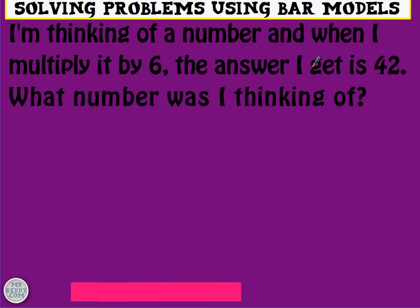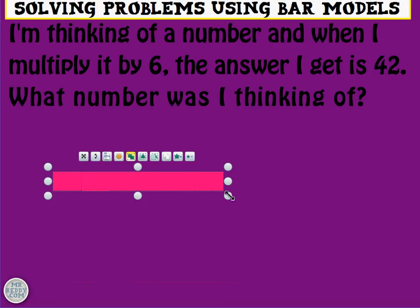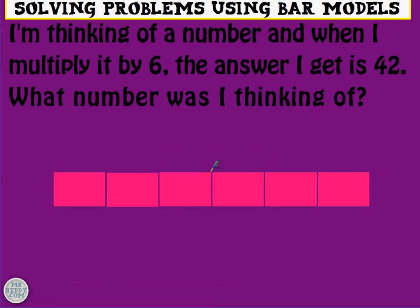Right. In this one, I'm thinking of a number and when I multiply it by 6, the answer is 42. So if I annotate the bar model like this, this will be x, I multiply it by 6 and the final answer is 42. x times 6 is 42.